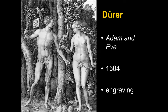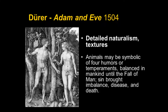In the Adam and Eve engraving you can certainly see the detailed naturalism and all the different textures: flesh, hair, different animal fur, the feathers of the parrot, the bark of the tree — all with black line.